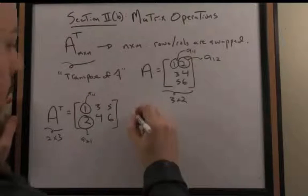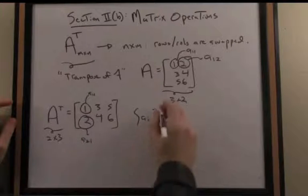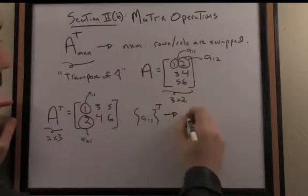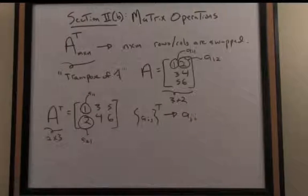Generally speaking, if I have a matrix and consider the element A_IJ in the Ith row and Jth column, taking the transpose gives the A_JI element.